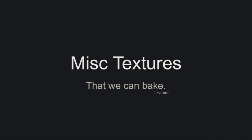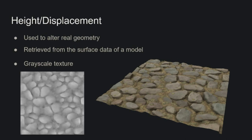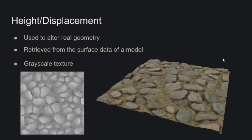In this video, we'll take a look at some of the more miscellaneous textures that are still somewhat useful, but maybe less commonly used than the previous textures. The first one is going to be the height or displacement map. This is going to be used to alter actual geometry — it displaces actual vertices — and will be retrieved from the surface data of the model, just like our normal map was retrieved from the high poly. You're probably not going to want to bake out height or displacement to be used on a specific model in a game, but you might want to bake it out if you're modeling a rock and want to use that height information in a software like Substance Designer to make a procedural and seamless material.